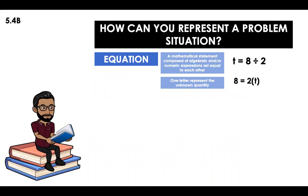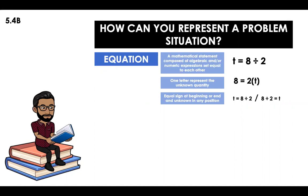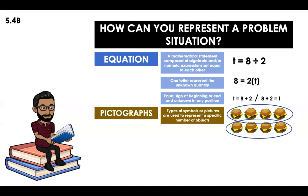As you can see here, it's the same equation, however, we're using the inverse operation: 8 is going to be equal to 2 times t. The equal sign can be at the beginning or the end, and the unknown can be in any position. So the unknown could be at the beginning — t is equal to 8 divided by 2 — or the unknown could be at the end: 8 divided by 2 equal to t. Both of those are the same.